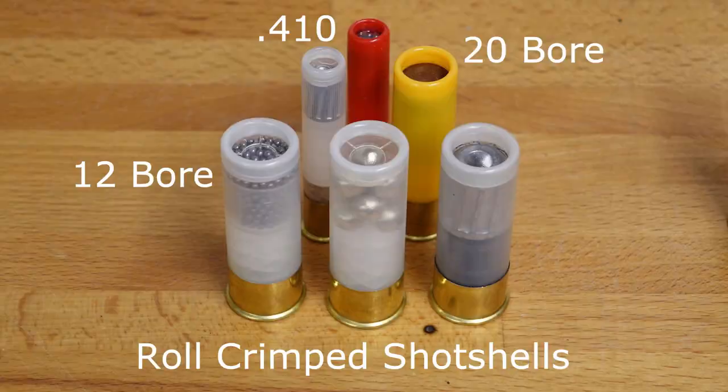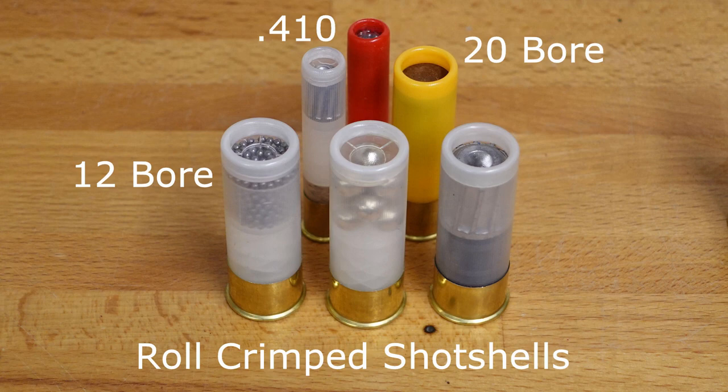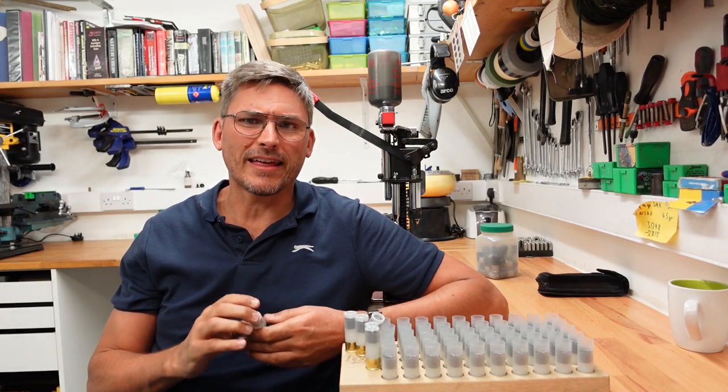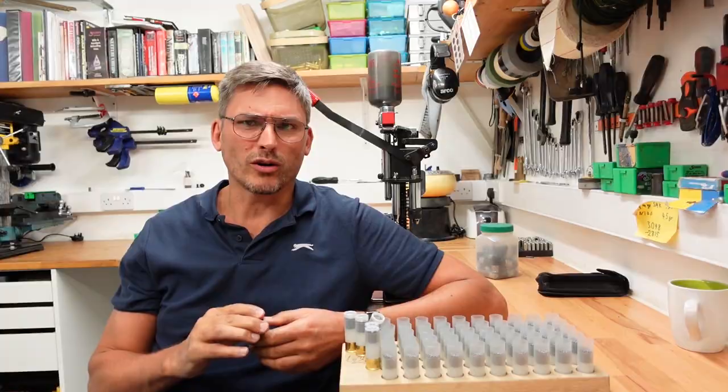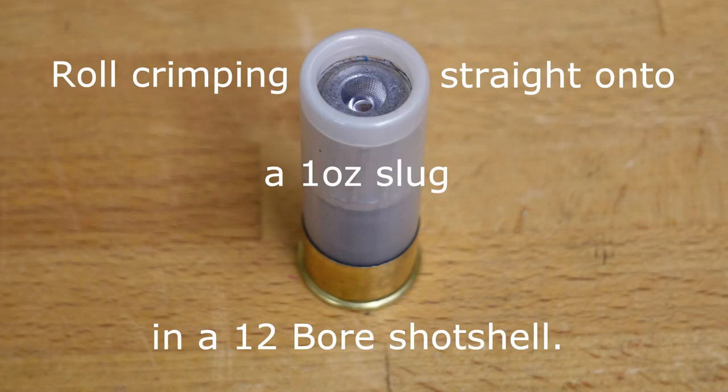The first is to basically go with a roll crimp. A roll crimp just forces the edges of the hull over itself, holding down a plastic disc if whatever is inside is loose. If you have a slug or something like that, you can just roll crimp straight on top of the slug and you don't need the overshot disc.